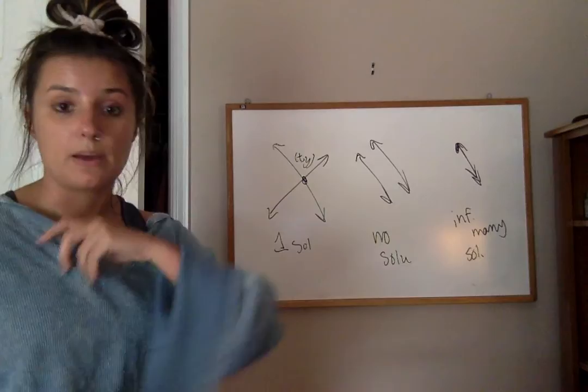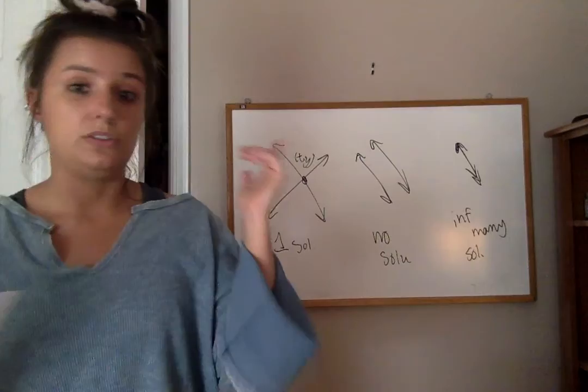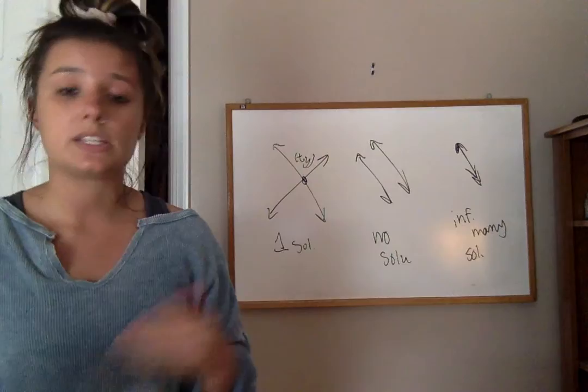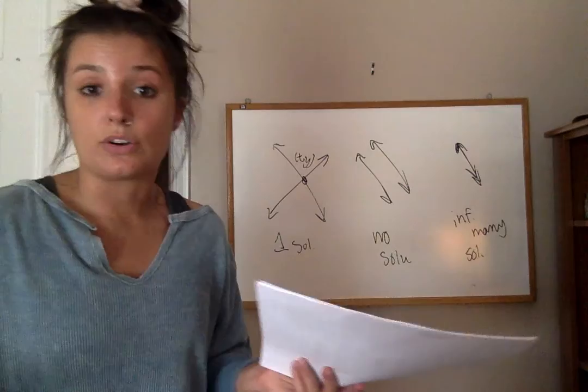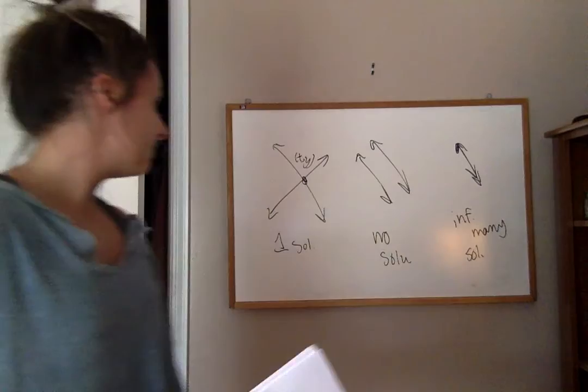You can graph lines in many different ways — you can use your calculator, you can use a source online, or you can just plug in different x values and see what you get for y and plot those points. You guys know how to graph lines, so that should be easy enough. Just graph them and look to see where they intersect, if they do intersect at all, or if they're the same line. You're doing the same thing on page 406.